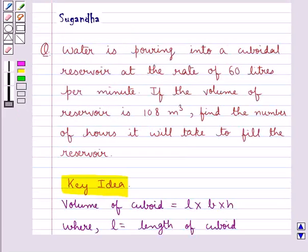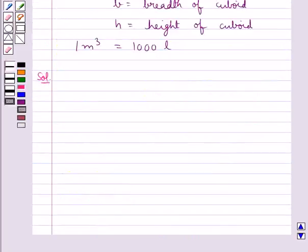It is given in the question that water is pouring into a cuboidal reservoir at the rate of 60 liters per minute. Thus we have in 1 minute, 60 liters of water is pouring.